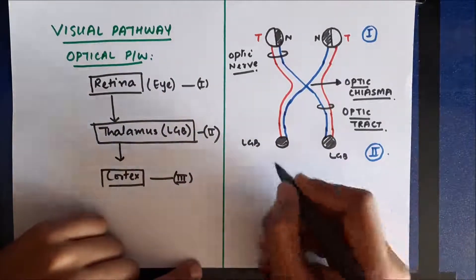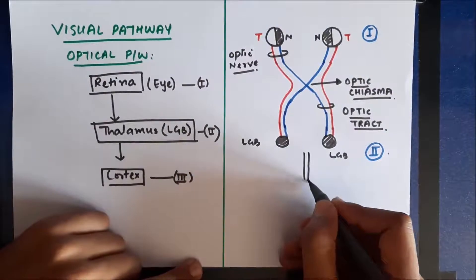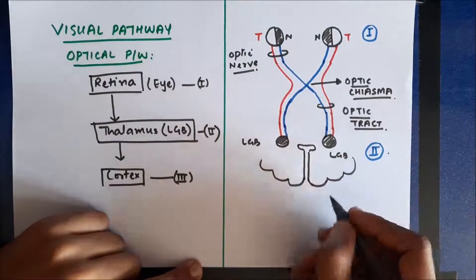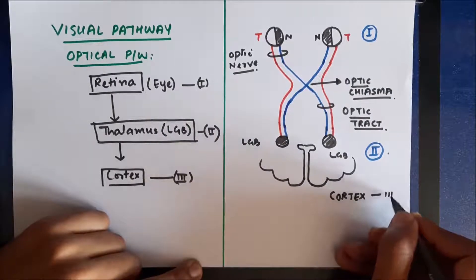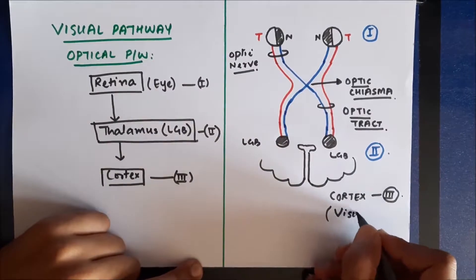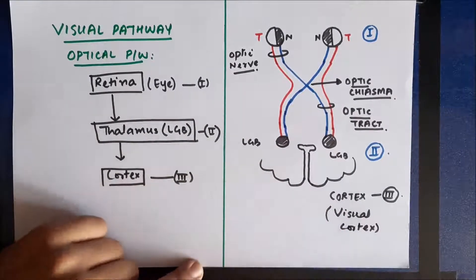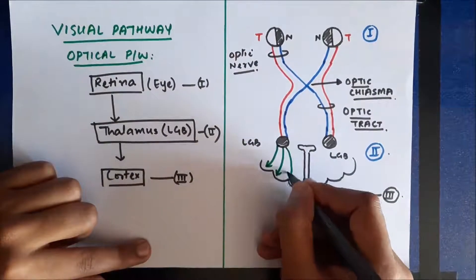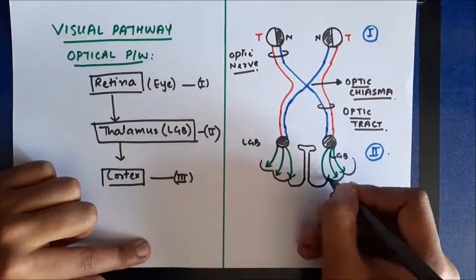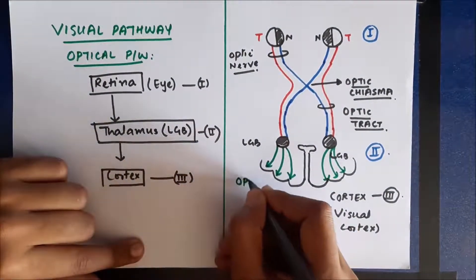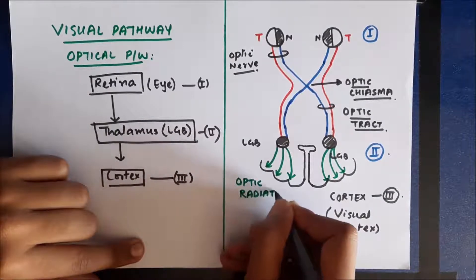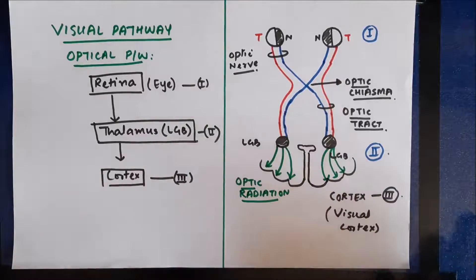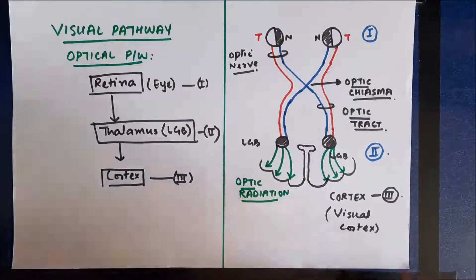From the lateral geniculate body, these fibers finally travel to the cortex — specifically the visual cortex, which is control point three. The fibers from the lateral geniculate body to the visual cortex form a structure known as the optic radiation. Finally, these fibers reach the visual cortex where the information is interpreted and we are able to see objects.